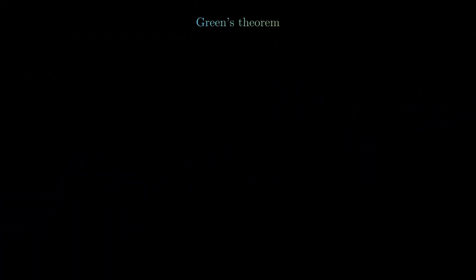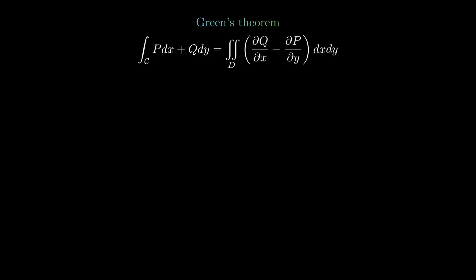Let's recall the statement of Green's theorem. Green's theorem says that the line integral over the closed loop C of P dx + Q dy, where P and Q are functions of two variables, is given by the double integral over the region D it bounds of (∂Q/∂x − ∂P/∂y) dx dy.